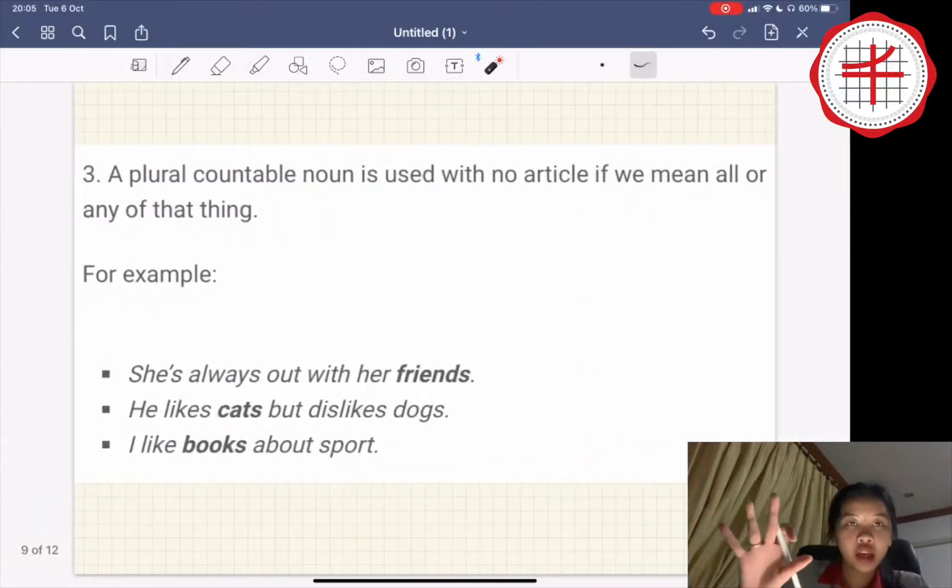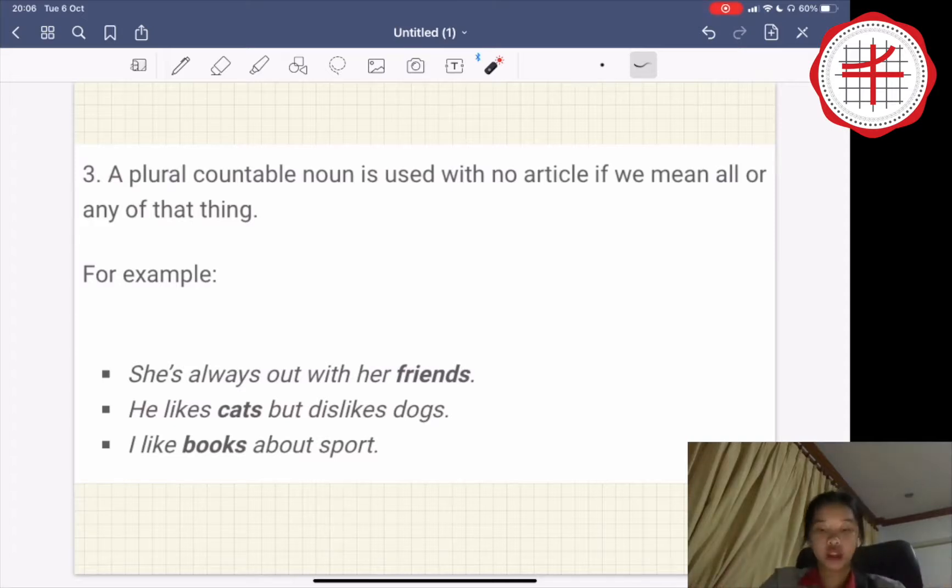Number three, a plural countable noun is used with no article if you mean all or any of that thing. For example, she's always out with her friends. He likes cats but dislikes dogs. I like books about sport, like this.